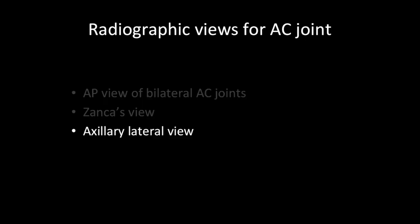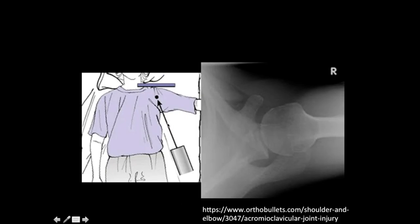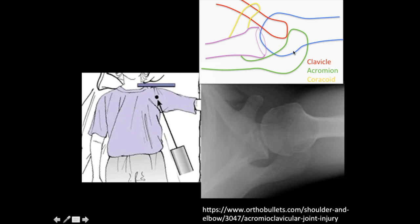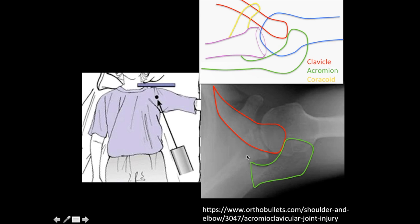The third view is the axillary lateral view. In this view you are looking at the AC joint from the top — you can see the clavicle, the acromion, and the acromioclavicular joint. This X-ray is particularly useful in identifying posterior dislocation of the clavicle. It can also identify fractures of the acromion process and the lateral end of the clavicle.